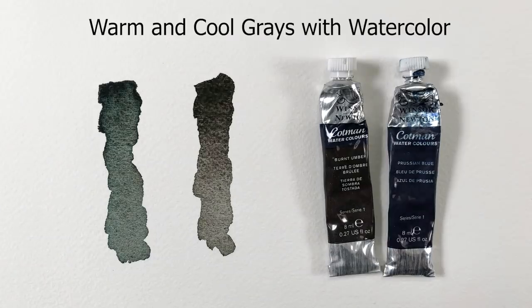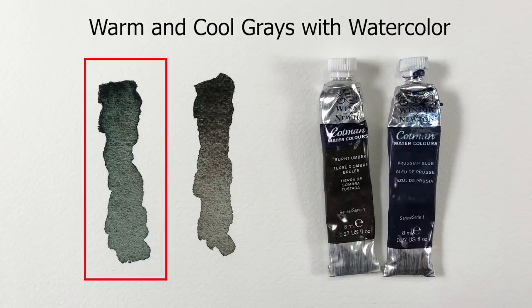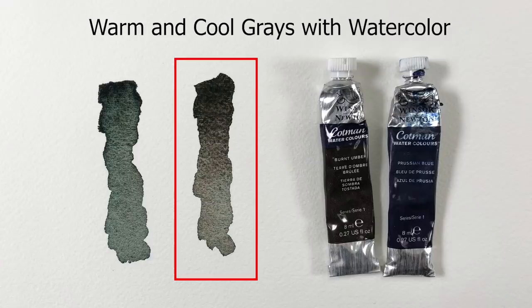This works with any medium that you choose to work with. Here's a look at warm and cool grays mixed with watercolor. In this case, Prussian blue has been combined with burnt umber. In the first example, Prussian blue dominates the mixture, resulting in a cooler gray. In the second example, burnt umber dominates the mixture, resulting in a warmer gray.